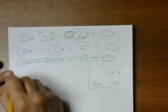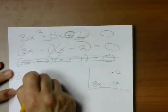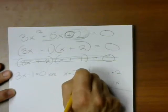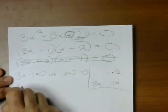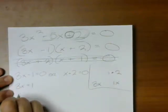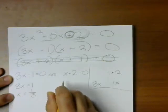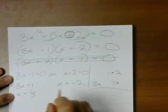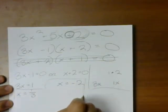In any case, let's finish the problem. This tells me that one of these things is true. If the first is true, I get 3x equals 1, or x is 1 third. If the second is true, I get x is equal to negative 2. So these are my answers.